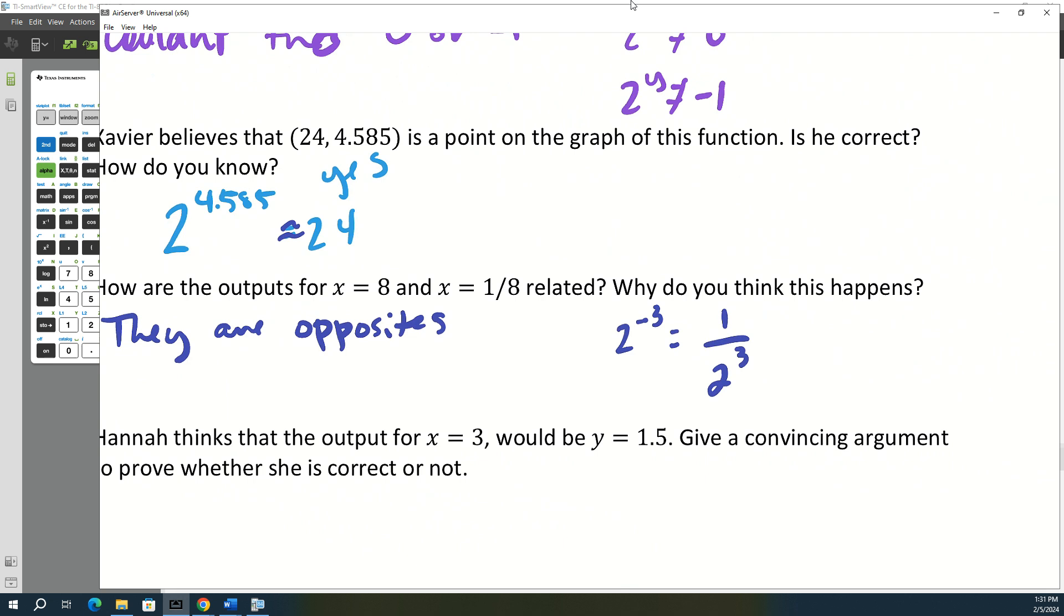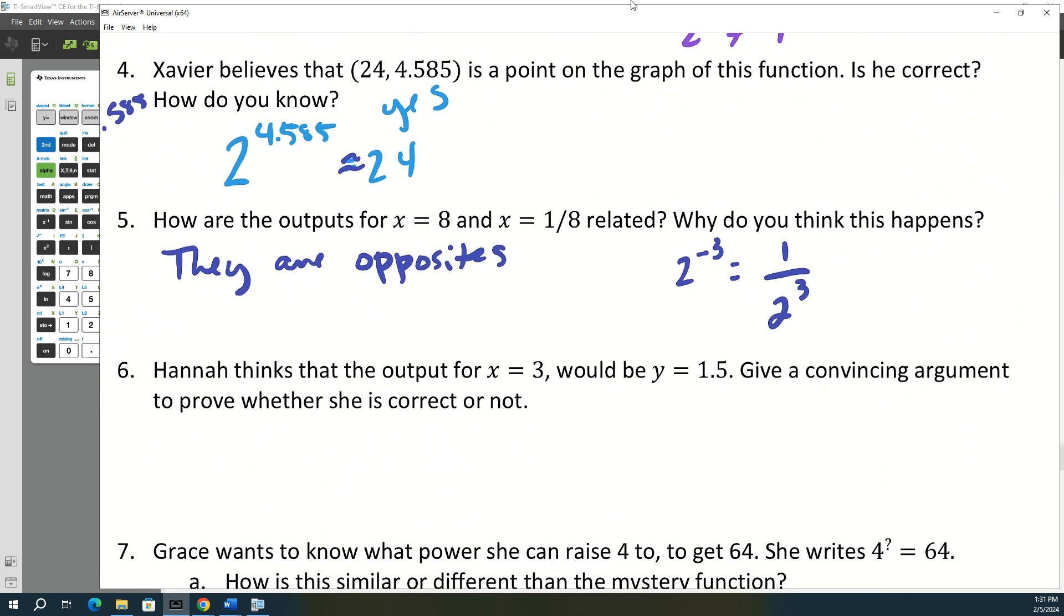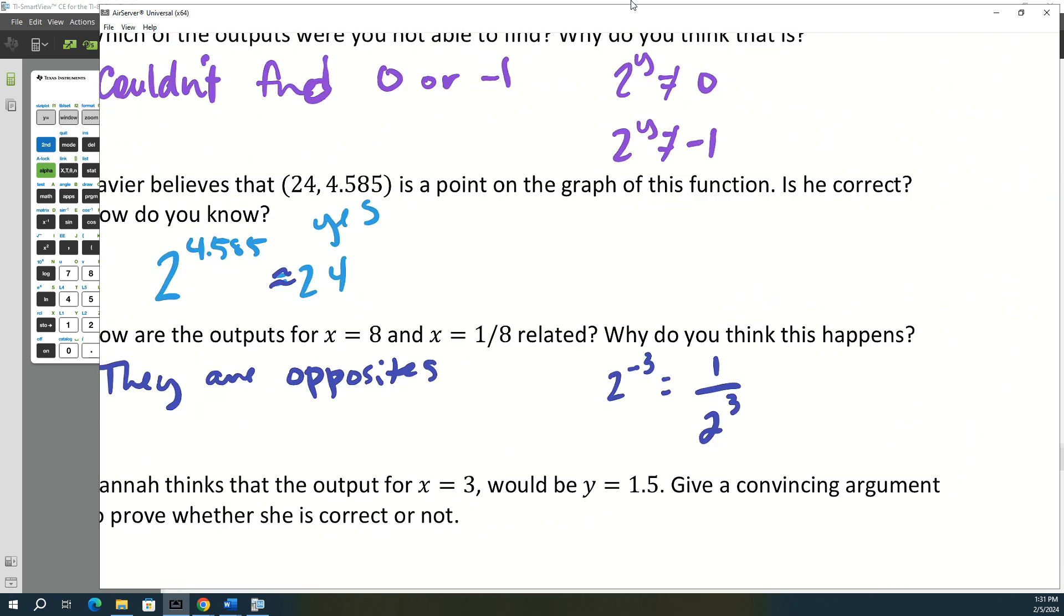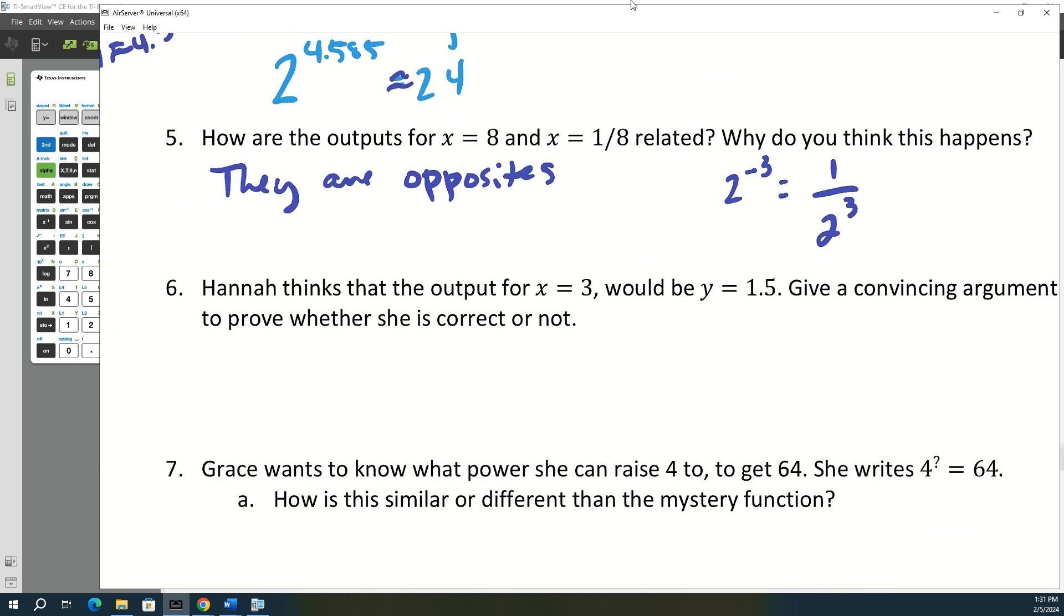So one of them was 8 on top and one of them was 8 on the bottom. All right, and then Hannah thinks that the output for 3 should be 1.5. We said it was 1.6-ish. But 2 to the 1.5, it's close. It's going to be 2.8.